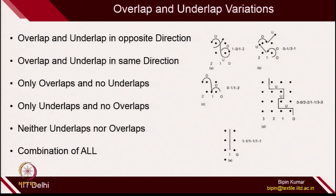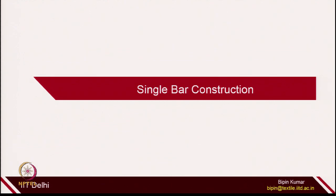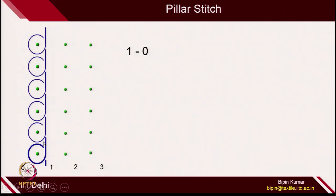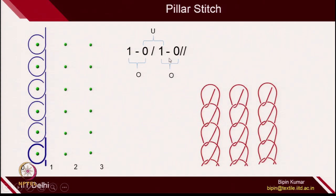You can choose any 2 possibilities of overlap and underlap and create design patterns. Now let's move to single bar construction. The first construction which is very easy to make is the pillar stitch. In the lapping diagram, 1 to 0 is overlap on the front side, then 0 to 1 is underlap on the back side of the needle, then again 1 to 0 is overlap, and then it repeats.